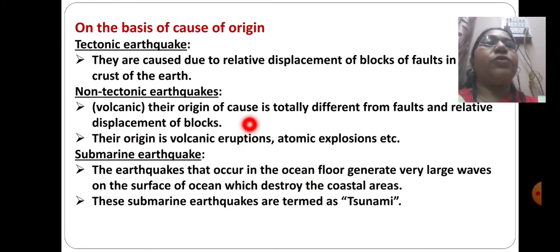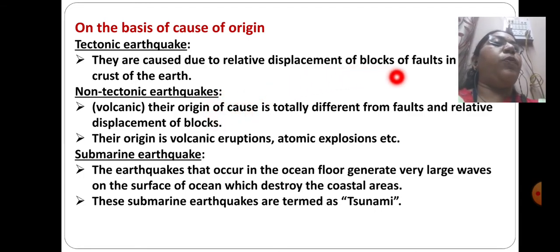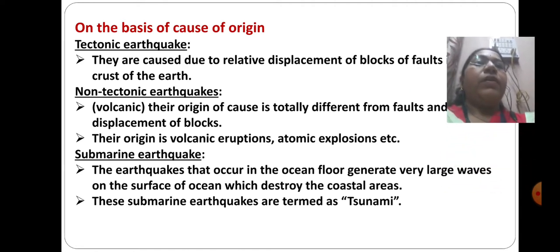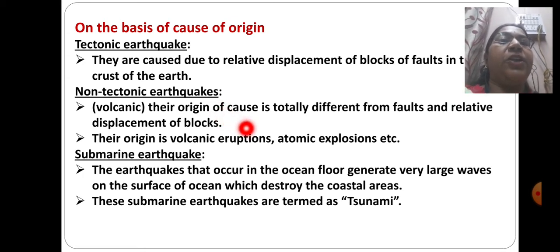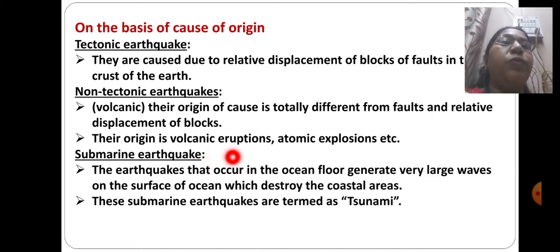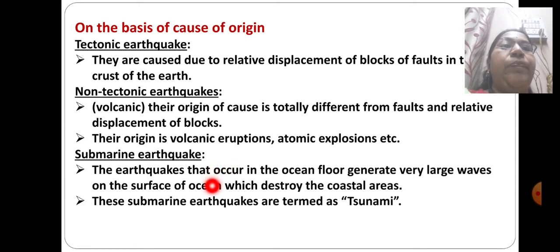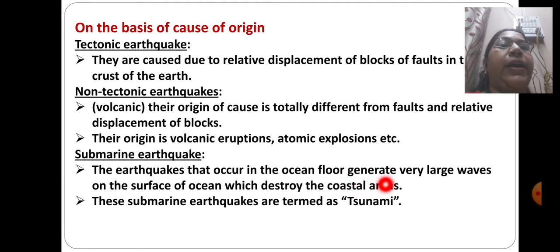On the basis of origin: tectonic earthquakes are caused due to the relative displacement of blocks along faults in the crust of the earth. Non-tectonic earthquakes — including volcanic and vibrational earthquakes — originate from volcanic eruptions, atomic explosions, etc. Submarine earthquakes occur on the ocean floor and generate very large waves on the surface of the ocean, destroying coastal areas. These submarine earthquakes are termed as tsunami.